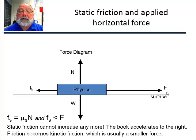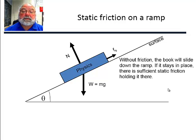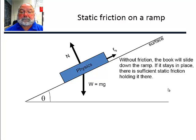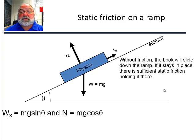On a ramp: if there was no friction, the book would be sliding down the ramp because there's a component of gravity that is parallel to the ramp in the downward direction. Static friction is opposing that motion, so it's parallel to the ramp and pointing up. The x-component of the weight — where the x-axis is along the surface — is equal to mg sine theta, and the normal force is equal to mg cosine theta.